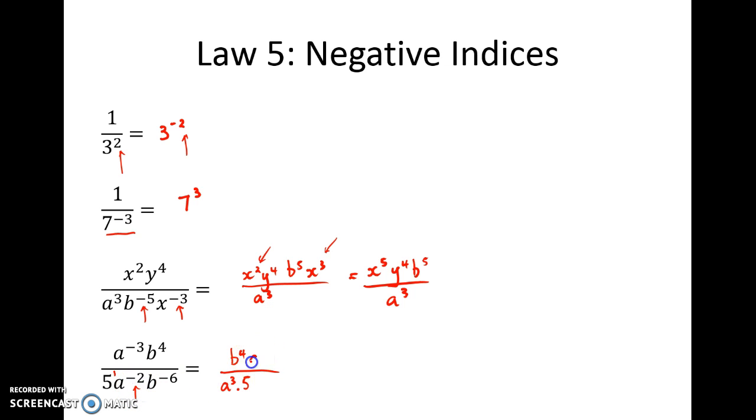But the a to the negative 2 can now swap up the top and I'll change it from negative to a positive. And similarly the b to the negative 6 having a negative indice can be moved to the top as well. With a bit of rearrangement and consolidating the b terms which both have the same base, I'll have a squared b to the power of 10, remembering to add those indices when we multiply. And I'll have 5a cubed on the bottom.